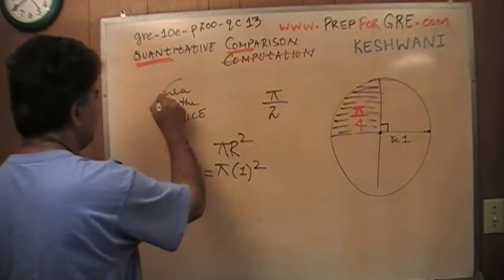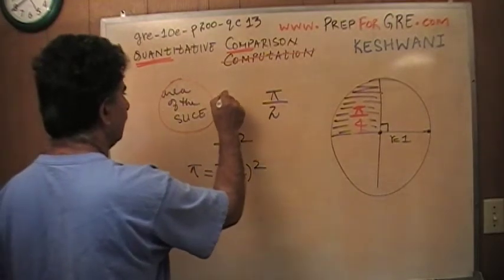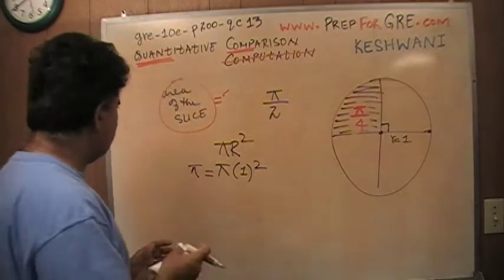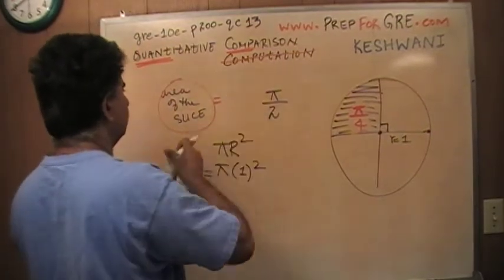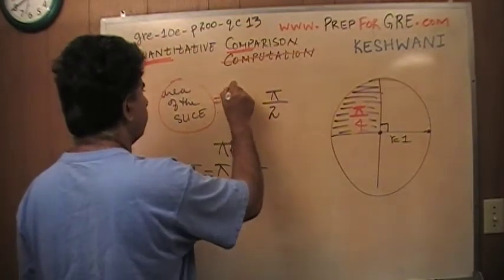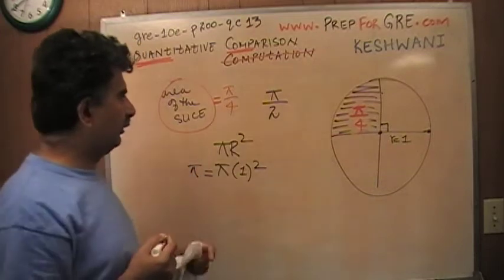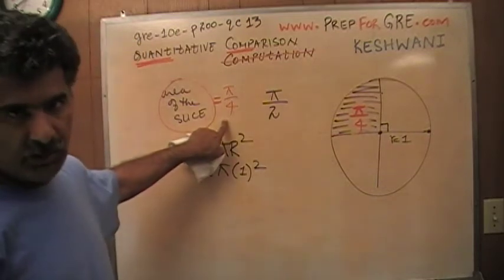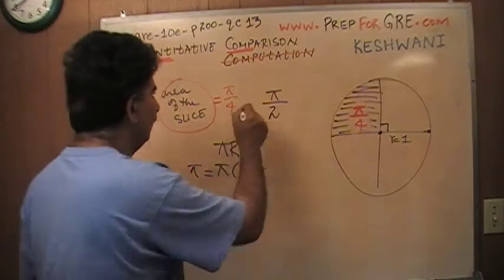This quantity here is π over 4. And of course, a quarter of π is going to be less than half a π.